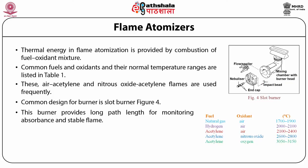The burner is mounted on an adjustable stage that allows the entire burner assembly to move horizontally and vertically. Horizontal adjustment is necessary to ensure that the flame is aligned with the instrument's optical path. Vertical adjustments are needed to adjust the height within the flame from which absorbance is monitored. This is important because two competing processes affect the concentration of free atoms in the flame.